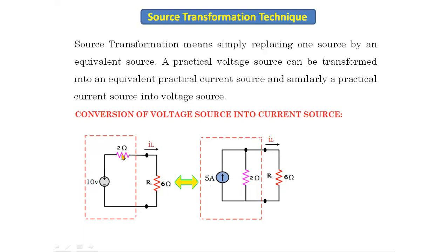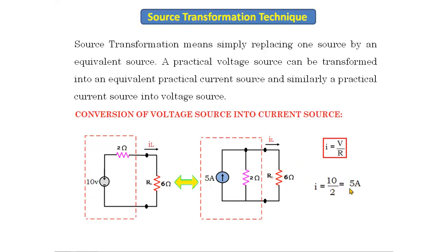There is no change in the resistor value — from here to here it remains 2 ohms. To find the value of the current source, we use Ohm's law: I = V/R. Here, V = 10 and R = 2, so I = 10/2 = 5 amperes. The current source is 5 amperes.